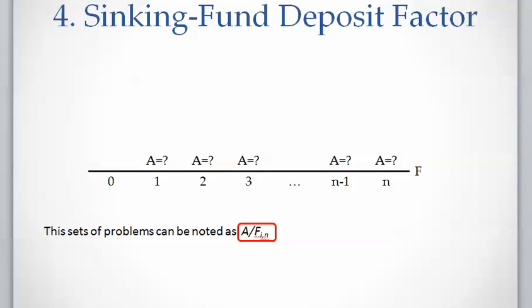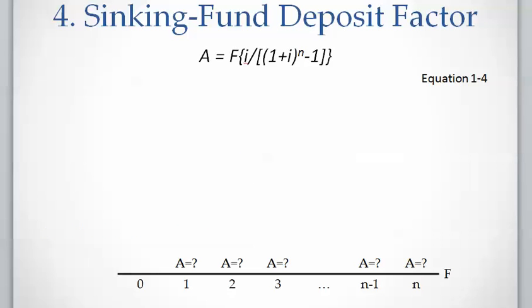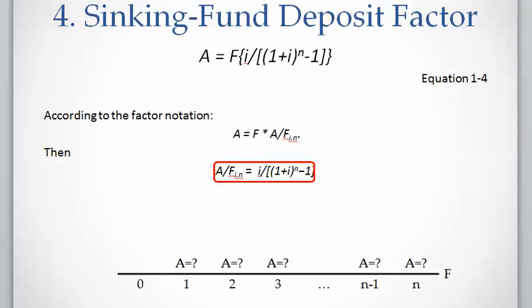Equation 1.3 for the uniform series compound amount factor can be rewritten with A as the unknown to solve these problems, which gives equation 1.4. Equation 1.4 can determine the uniform series of equal investments A for an accumulated future value F, number of investment periods N, and interest rate I.